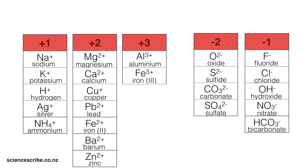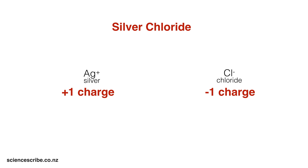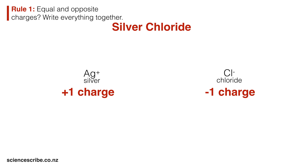Let's look at a first example of writing an ionic formula — silver chloride. To do this I need to find silver and chloride on my table of ions and compare their charges. Silver has a plus one charge while chloride has a minus one charge. Here's the rule: if you've got equal and opposite charges, you can just write the symbols together. So that gives me Ag for silver and Cl for chloride, meaning silver chloride is represented as AgCl. Notice that the charges are not shown in the final formula.